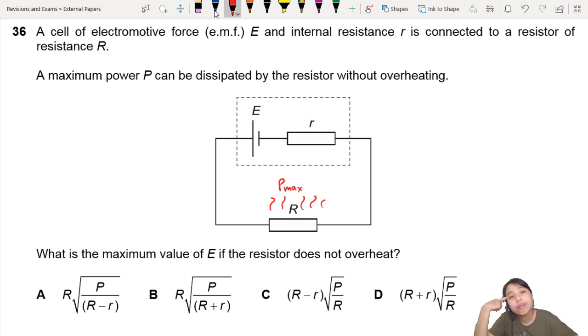Okay. P_max. What is the maximum value of E if the resistor does not overheat? Wow. Where are we going to start?